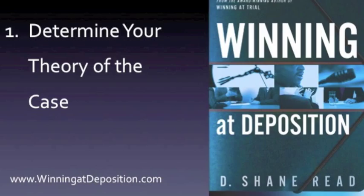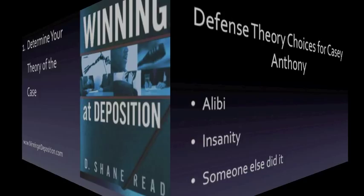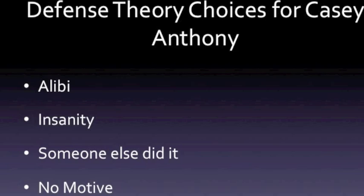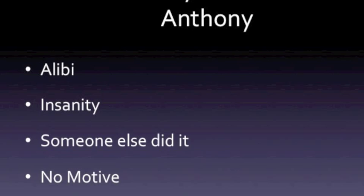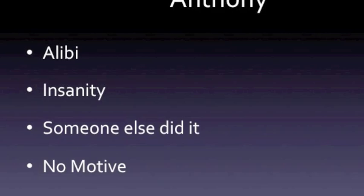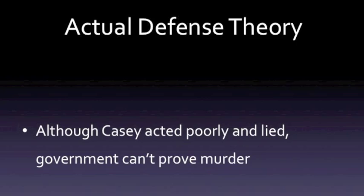So let's look at a quick example of how to build your theory from the Casey Anthony trial. And although that's a criminal case, it's perfect for our purposes here. The defense in the Casey Anthony trial had to choose between alibi, insanity, someone else did it, and no motive. Remember, they had to choose a theory that the jury would believe after hearing all the evidence. And out of these choices, they chose this one.